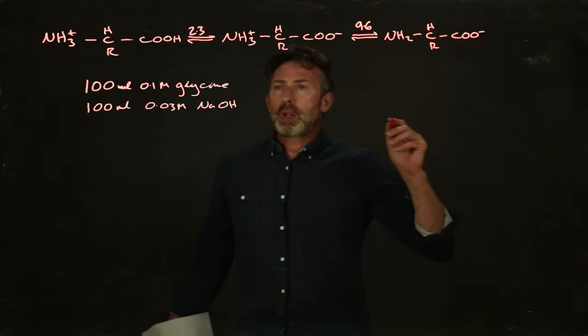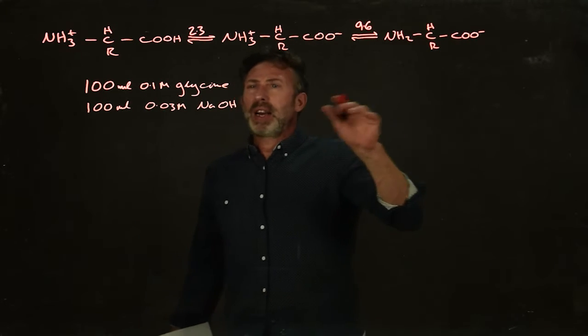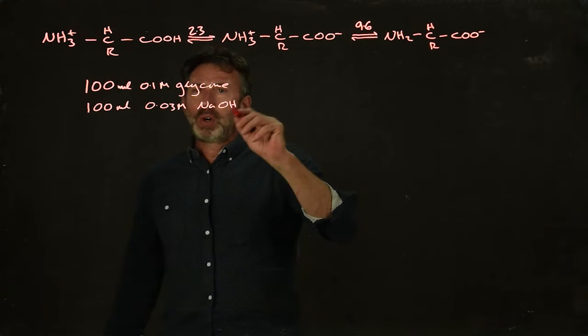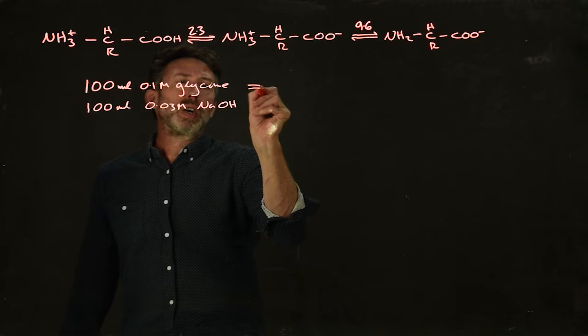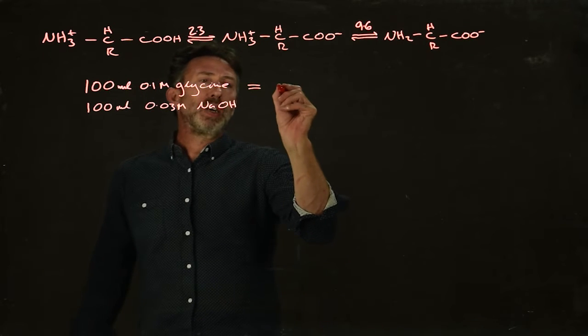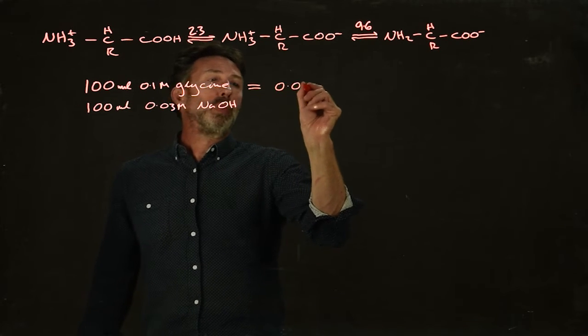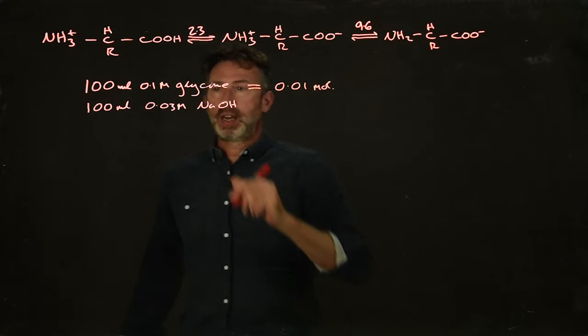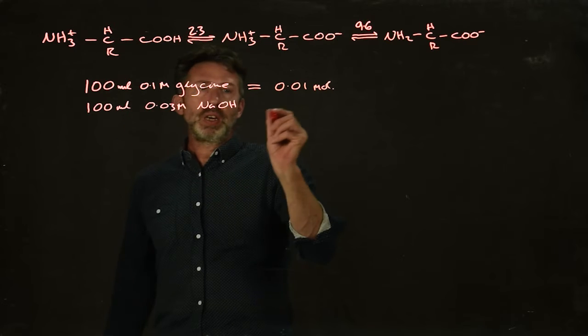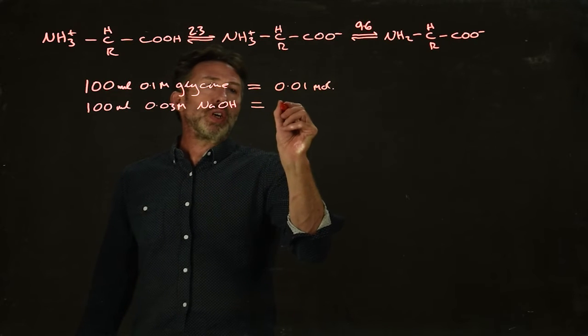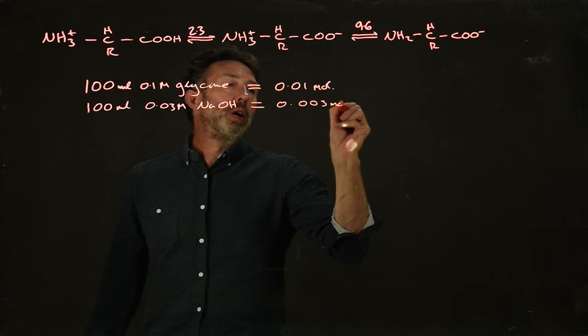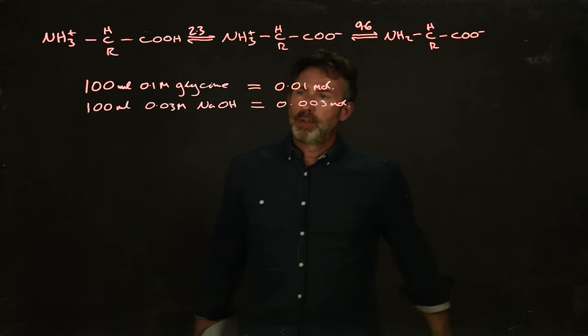Let's calculate out the absolute numbers of molecules here. 100 ml of 0.1 moles per liter glycine—that's 0.1 liters times 0.1 moles per liter, so that's 0.01 moles of glycine. And 0.1 liters times 0.03 is equal to 0.003 moles of sodium hydroxide.